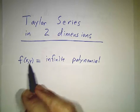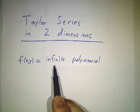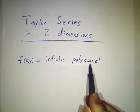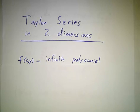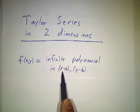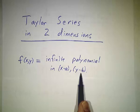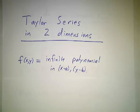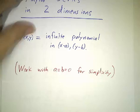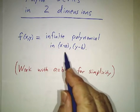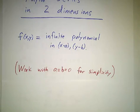So suppose we have a function f, we want to write it as an infinite polynomial. Technically it's not a polynomial because polynomials have only finitely many terms, but it's what you get when you take powers of x minus a and powers of y minus b and combine it and take more and more terms in the limit. We're going to work at a equals b equals zero for simplicity, just so we have powers of x and powers of y.